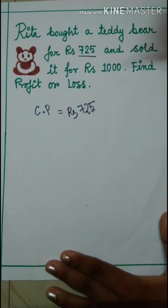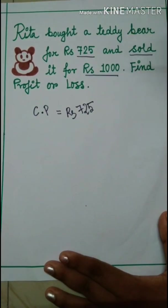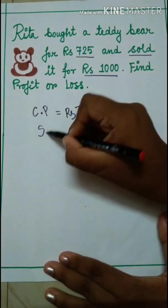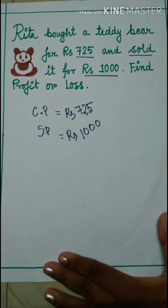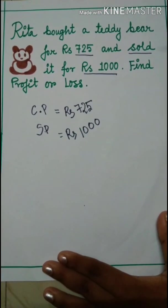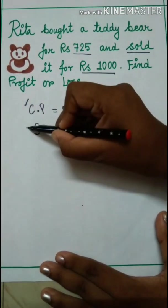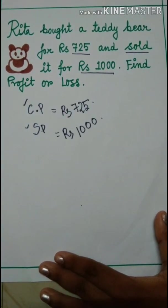And when Rita is selling the teddy bear that means that is her selling price. So SP will be Rs 1000. At first we have to note this from the question every time. So as CP is Rs 725 and SP is Rs 1000, we have to see at first which is bigger.